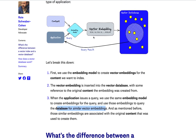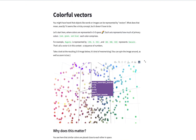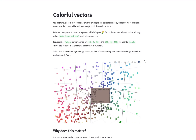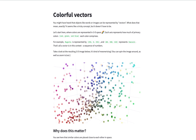Here we can see an example of how one might interact with a vector system. Say we have a question-and-answer bot searching through a private corporate knowledge base. Once we've created vector embeddings for all of our corporate knowledge data, a query comes in — the user inputs a question using the same embedding model to create an embedding of their query, maybe something like 'how do I open a support ticket?' The vector database then searches for similar vector embeddings, finding things closely related to support or how-to guidance, and returns those results.